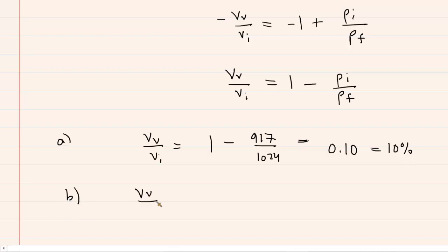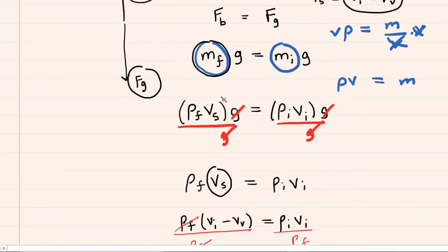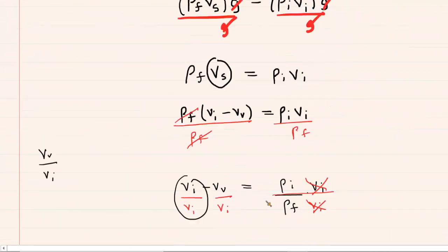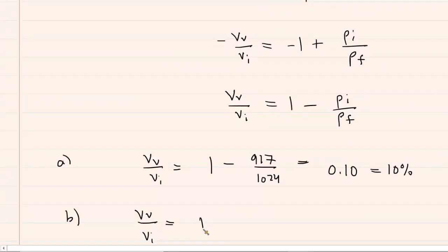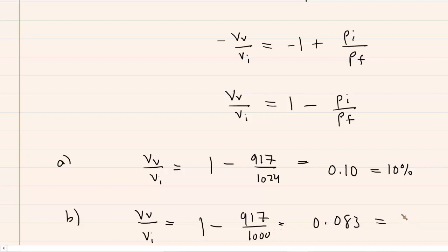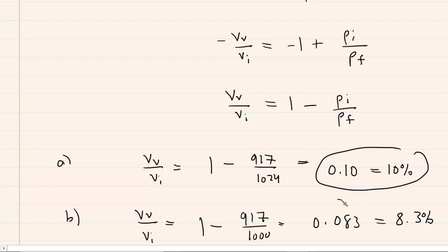For part B, the iceberg is floated in a different fluid with a density of only 1,000 kg/m³. Changing the denominator to 1,000 and calculating gives approximately 0.083, or about 8.3%. So a little bit less of the iceberg would be visible above the surface. Those are the correct answers to parts A and B.